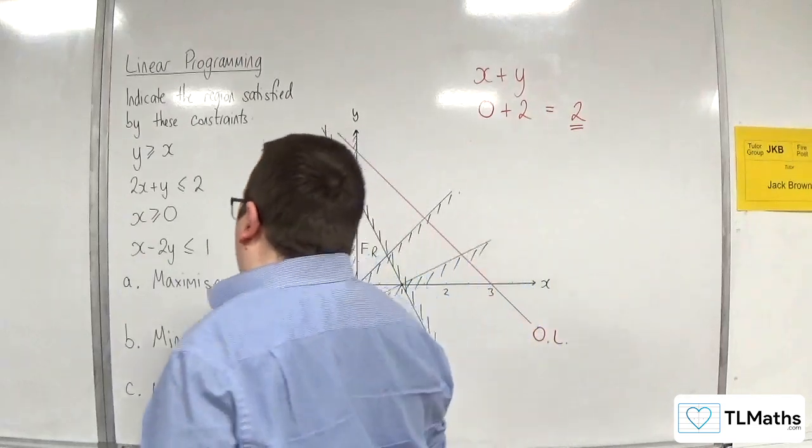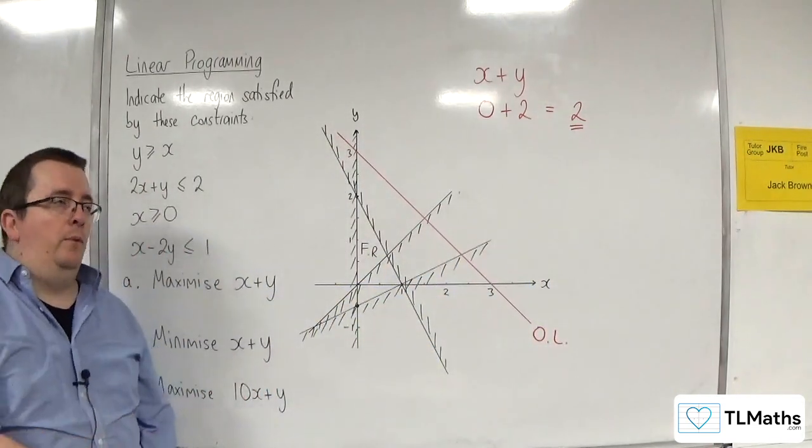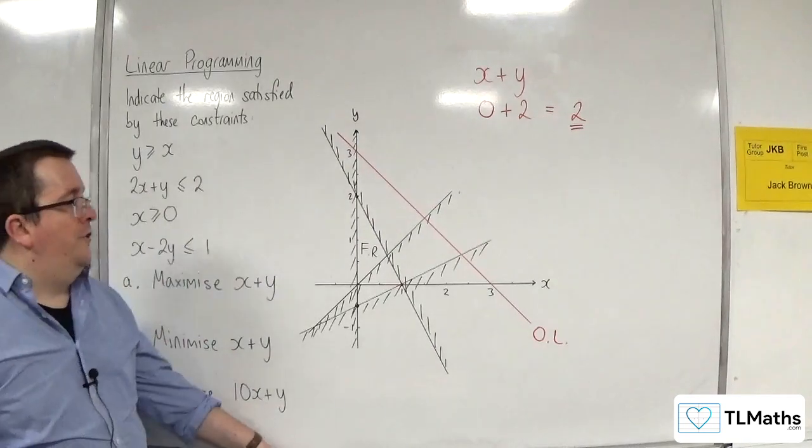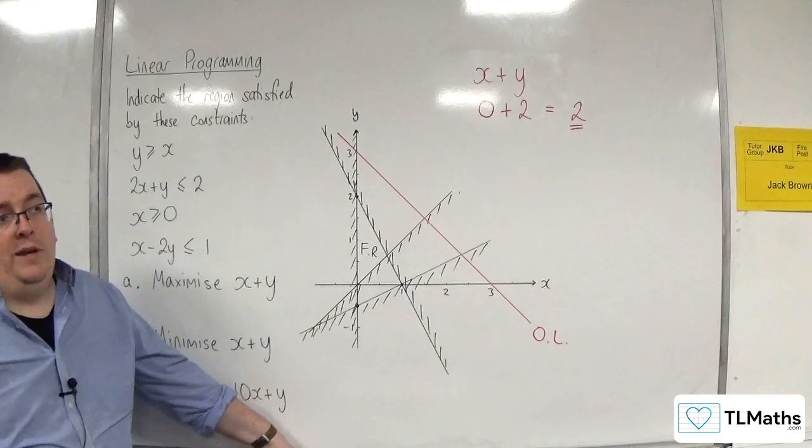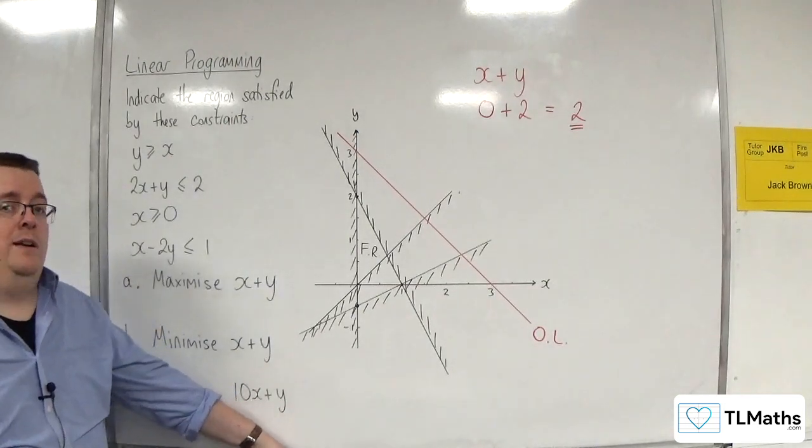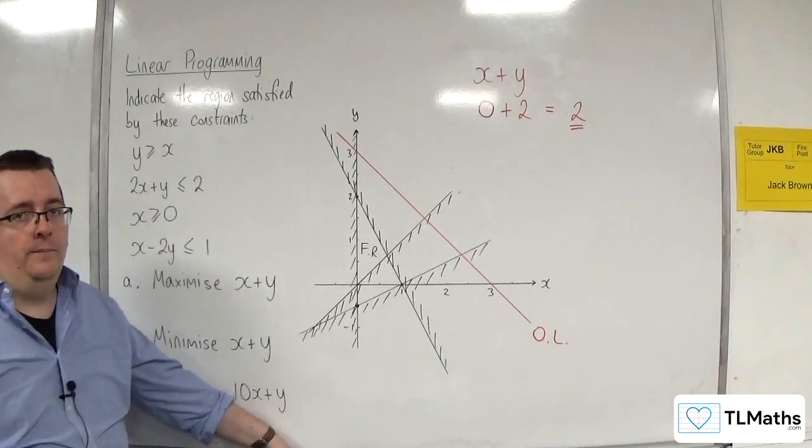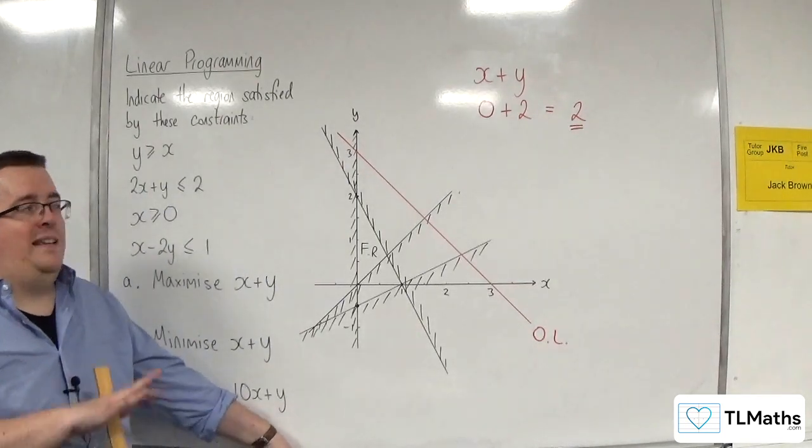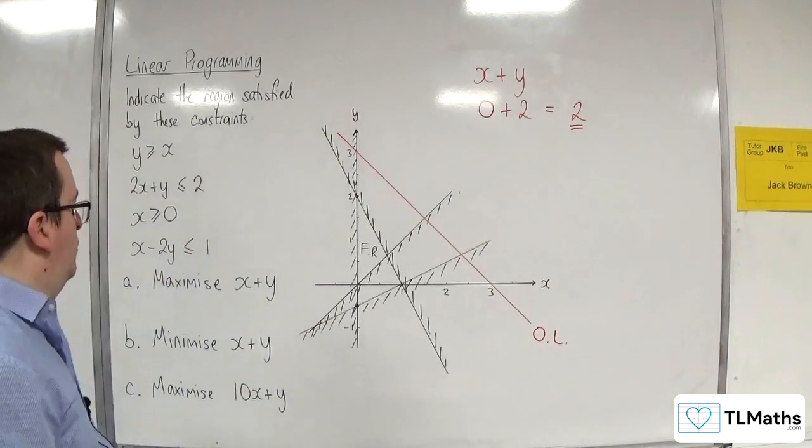Now, depending on the context of the problem, if you're looking at chairs and tables, for example, you're not going to make half a chair or half a table. So, that would lead into what we refer to as integer linear programming, where you're only looking for integer solutions. So, just let's assume for the time being that we're not. We can take any value that we like.